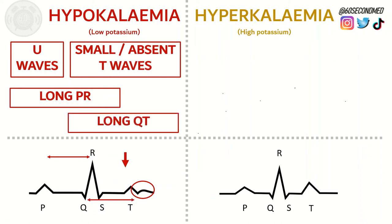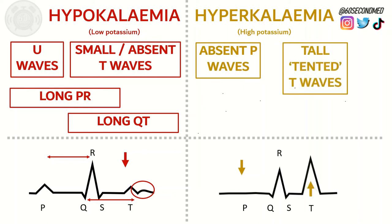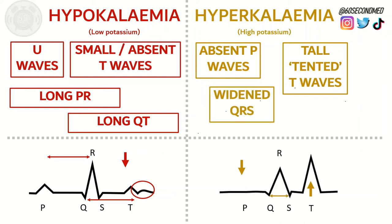Looking at hyperkalemia — high blood potassium — one of the changes that we might see here is an absent P wave. We may also see tall T waves, classically described as tented T waves. And we may also see a widened QRS.